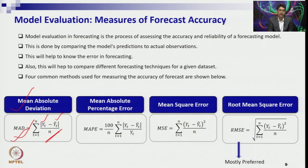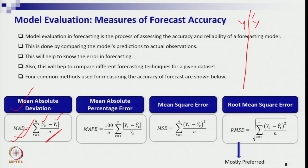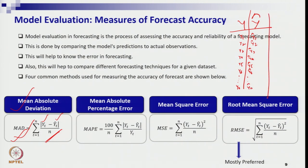Let me give an example. Suppose you have time series data: actual values y1, y2, y3, y4, y5 ... yn, and you have made forecasts ŷ1, ŷ2, ŷ3, ŷ4, ŷ5. The error term is simply y minus ŷ (actual minus forecast), which you write in the right-hand column.